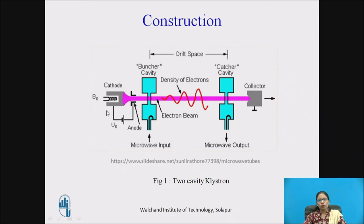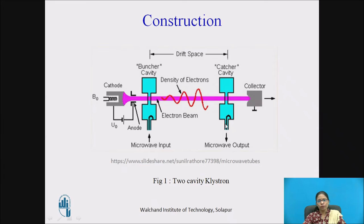Looking at the diagram of the two-cavity Klystron amplifier: this is cavity one and this is cavity two. The first cavity is called the buncher cavity and the second cavity is called the catcher cavity. The small microwave energy which needs to be amplified is given to the buncher cavity as RF input, and the amplified microwave energy is taken from the catcher cavity as microwave output.